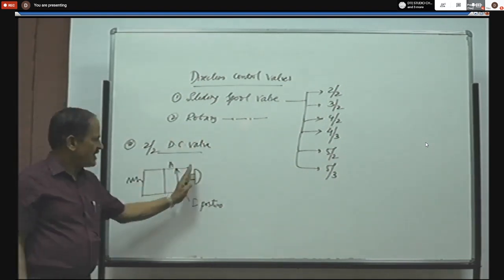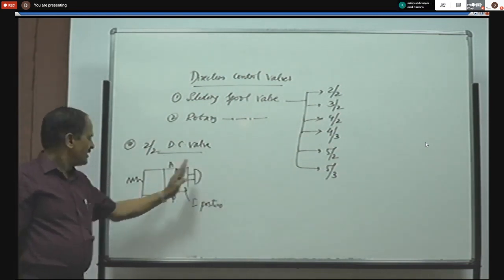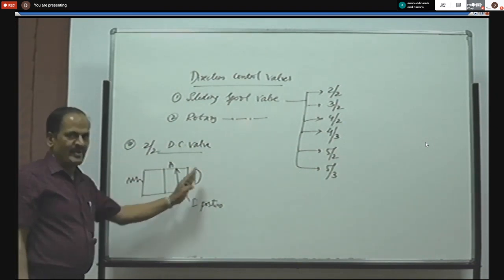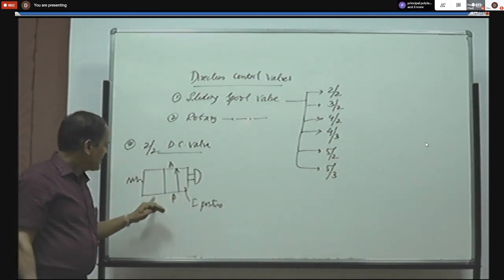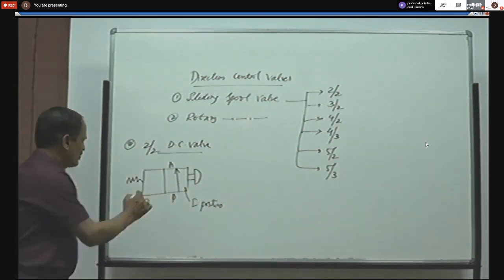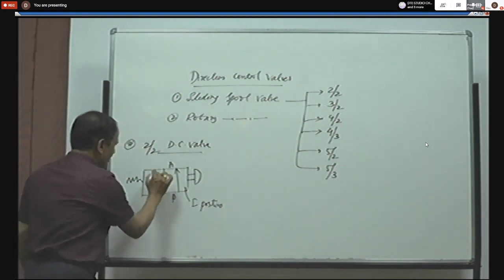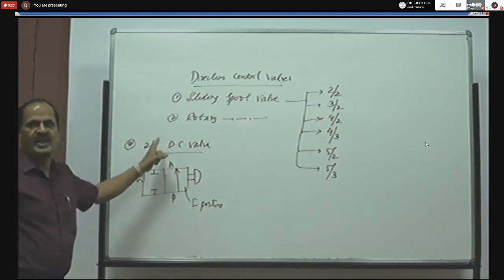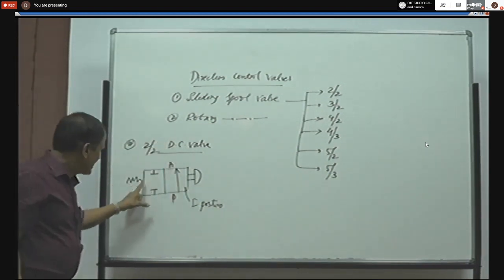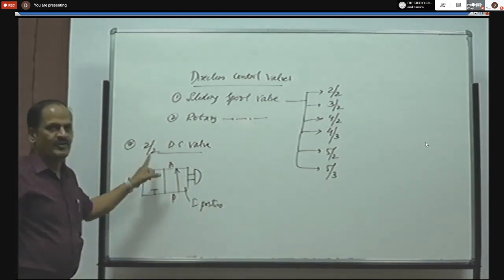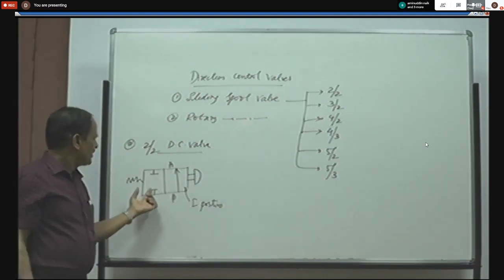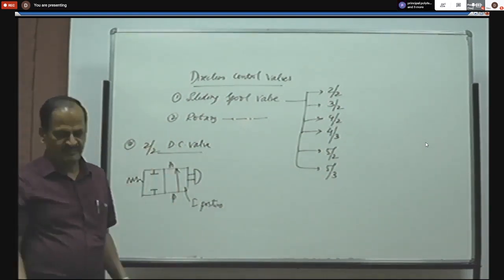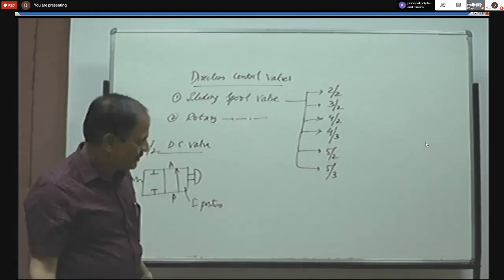Whenever the push button is released, there is a second position. Because of the return spring it comes back and the pressure port is closed. When the port is closed, no fluid flows from pressure port to the working port. This is the symbolic representation of the closing of ports. Since there are two positions and two ports made on the valve body, it is a 2x2 DC valve.